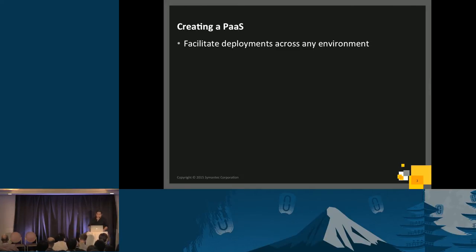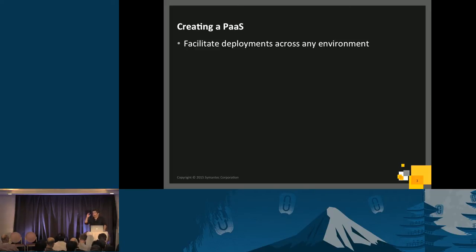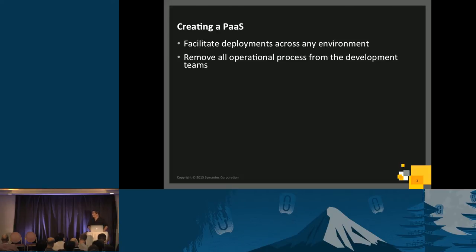One of the things is to allow developers to facilitate deployments across any environment. In our vision, the PaaS should be an abstraction layer where developers go and just select where they want to deploy — whether it's in private cloud on top of OpenStack, public cloud, or bare metal. They don't even have to know where it is. The other requirement was to remove all operational things and processes from the development teams.